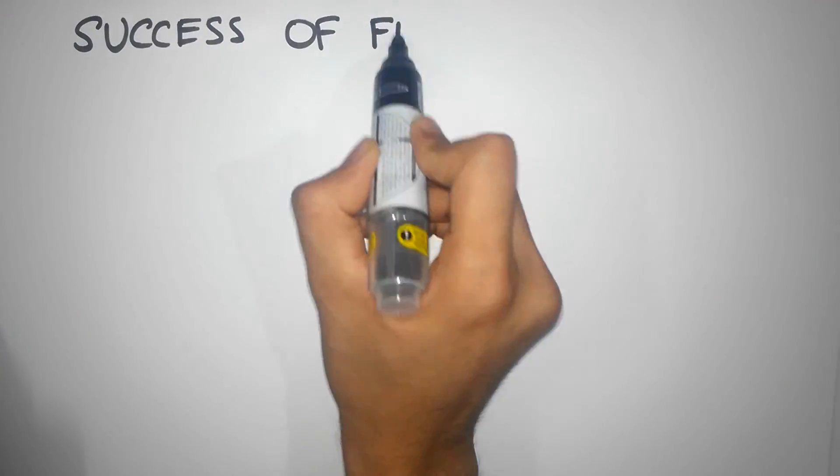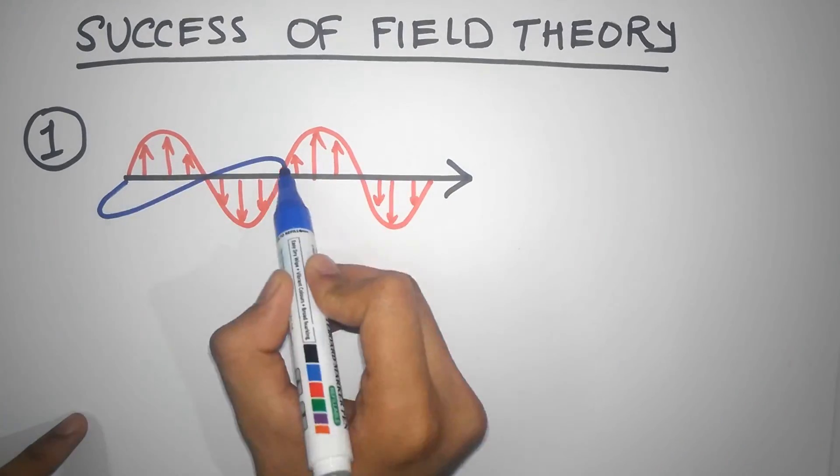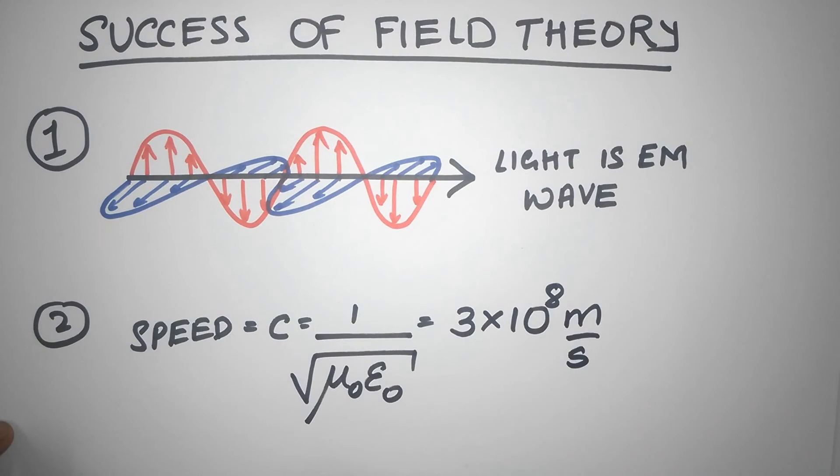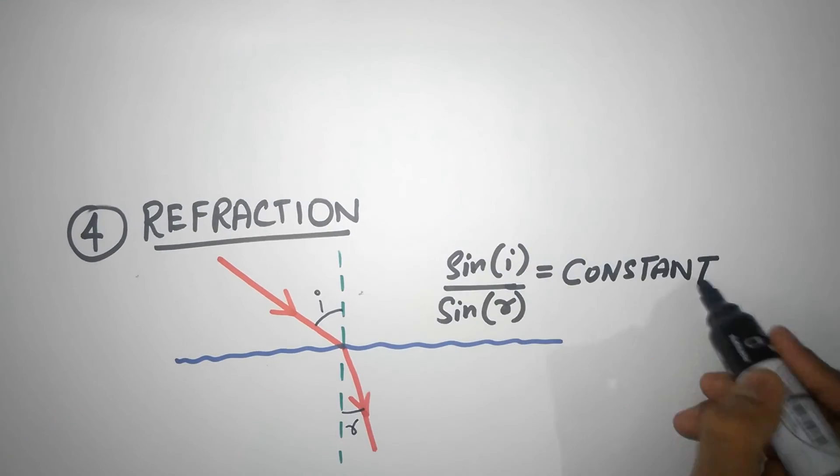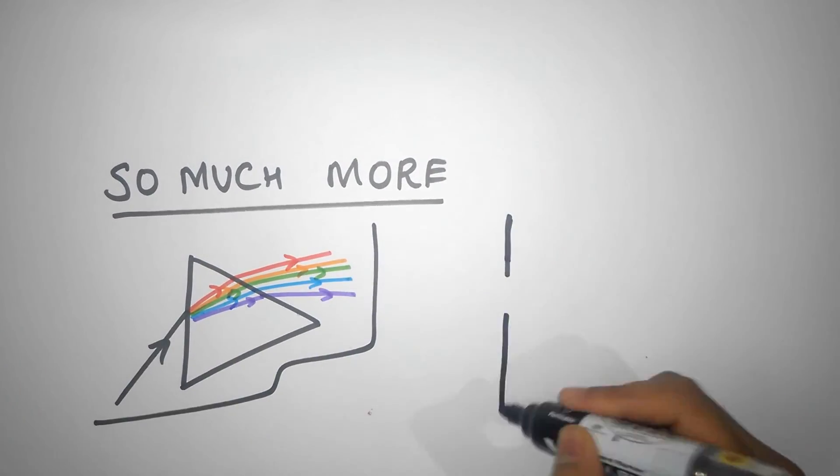Field theory is successful because it predicts so many things. It predicts that light is a wave in these electric and magnetic fields and describes almost all the properties like its speed in vacuum, the laws of reflection, refraction, and all these fun stuff you will learn when you take up a course on electricity and magnetism.